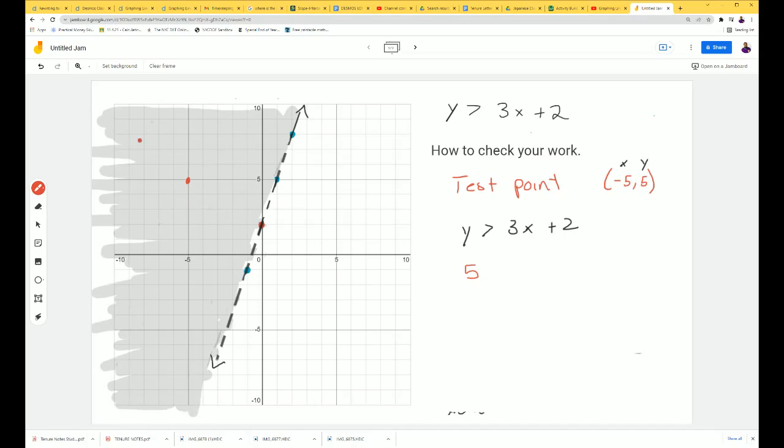So 5 is greater than 3, now we have x here, 3 times negative 5 plus 2. So if we do 5 is greater than 3 times negative 5, that gives us negative 15 plus 2. Bring down everything else. 5 is greater than negative 15 plus 2 is negative 13. Now the question is, is 5 greater than negative 13? This is true, so we know this works.